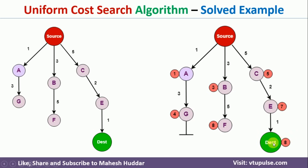We have now reached the goal node, so we stop the algorithm. The optimal path to reach the goal node is: source to C, C to E, E to destination, and the total cost is 8. This is how we apply the Uniform Cost Search Algorithm to a given graph to find the optimal path from the source node to the destination node.